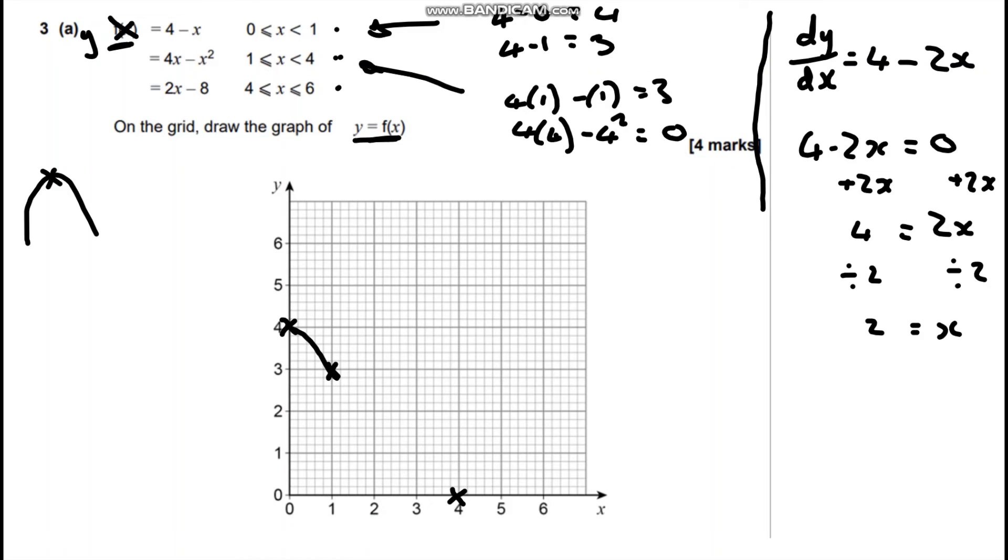So the maximum point is at x equals 2. So if we go in here our maximum point is going to be x equals 2. So what is that value? So we're going to substitute it in to our actual equation. So we're going to do 4 lots of 2 take away 2 squared, which is going to give us 8 take away 4 which is 4. So our maximum point is going to be at 2, 4.